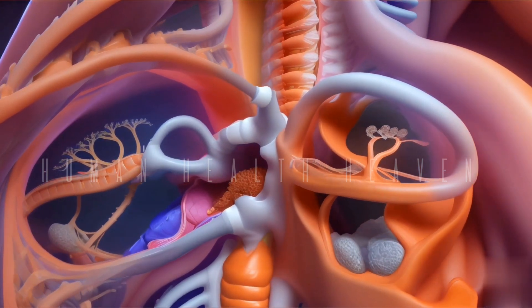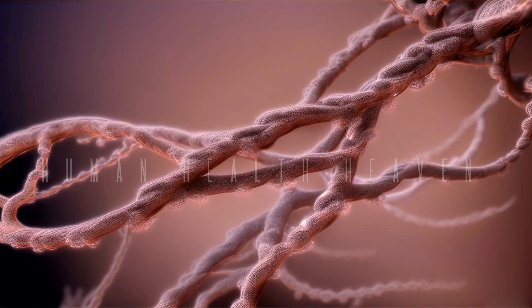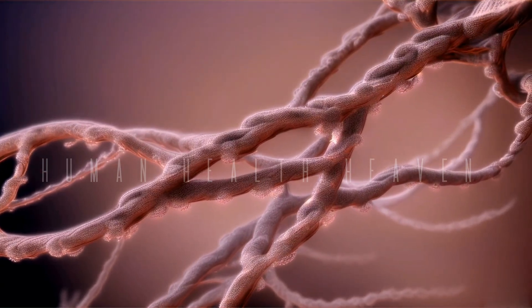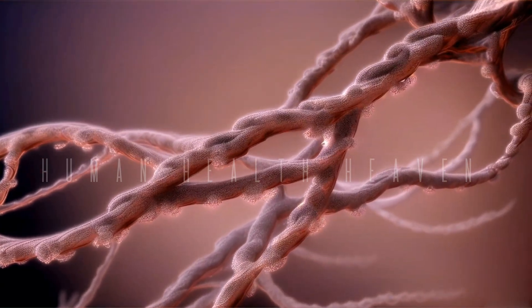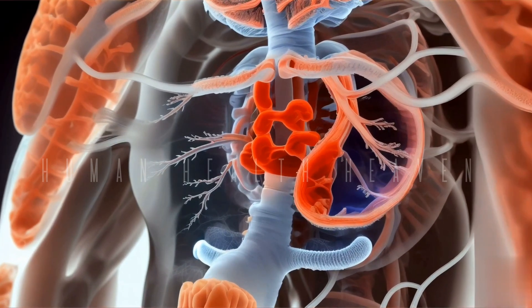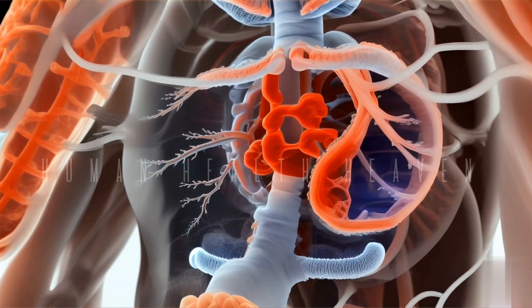The airway tubes that initiate the process of inhaling and exhaling are called bronchi. They emerge from the trachea and divide into two main branches known as the primary bronchi. The bronchi are a crucial component of the respiratory system, serving as a major part of the process of inhalation and exhalation.